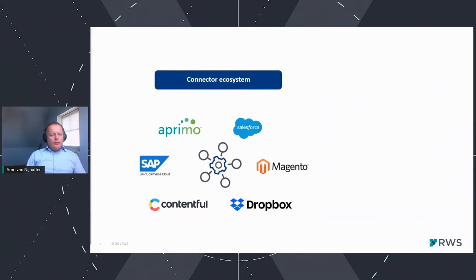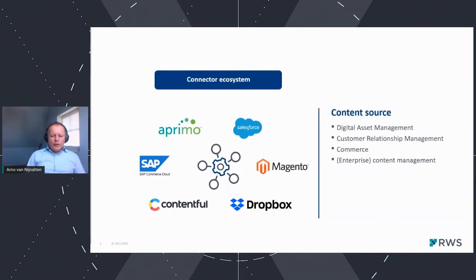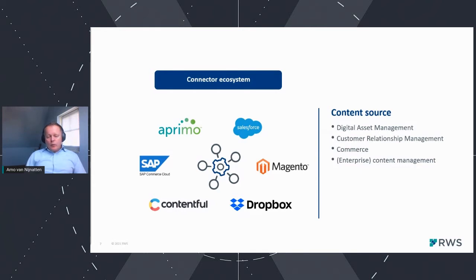Very much related to the integration framework is the continuously expanding connector ecosystem. We have an exciting list of connectors now available: Primo for digital asset management, and soon Primo marketing resource management. Salesforce CRM enables collecting customer data to create personalized experiences. SAP Commerce Cloud and Magento are commerce connectors that speed up delivery of blended content and commerce experiences. Contentful and Dropbox connectors allow Tridion to tap into content management repositories to serve as the central content hub for all disparate content.